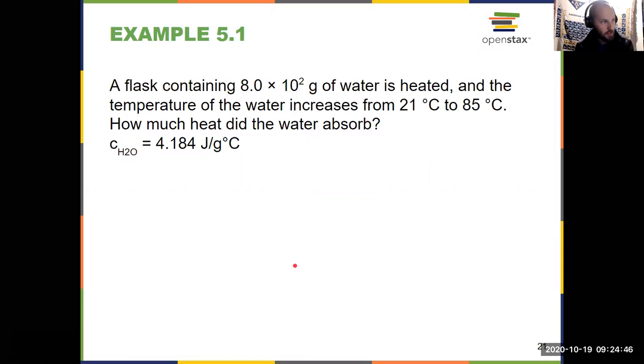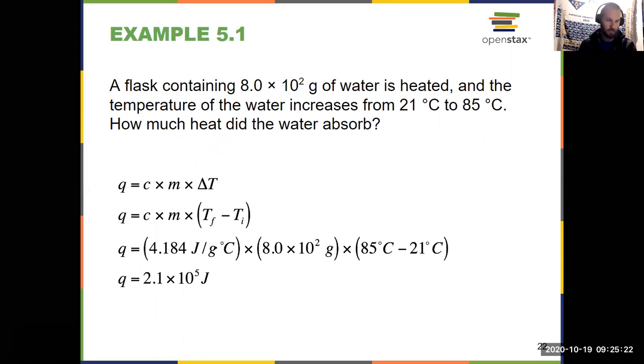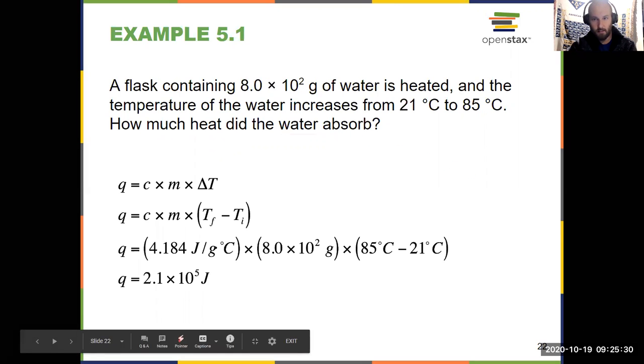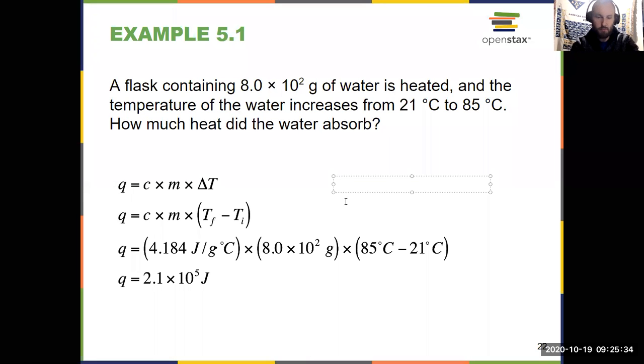It tells us we have a flask that contains 800 grams of water. We heat it. Temperature of the water increased from 21 to 85 degrees Celsius. So that tells me because the temperature increased, I know Q should be positive. But the question is, how much heat did the water absorb? So I use that formula, Q equals MC delta T. I have my mass in grams. I calculate my temperature change here, 85 minus 21, so 64 degrees Celsius. I use my specific heat. Multiply those three together and you end up with 210,000 joules, 2.1 times 10 to the fifth. But it's also common to see things in Chapter 5 represented in kilojoules. And that's just the kilo prefix. So one kilojoule is equal to 1,000 joules. So we could have also represented this answer as 210 kilojoules.